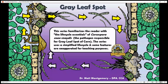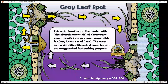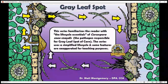Gray Leaf Spot is caused by this little pathogen — Cercospora zeae-maydis — but basically it's a fungus. What I'm going to present here is a simplified life cycle. I've exaggerated the size of some of the things in this life cycle just to give you a better understanding of how the pathogen works. The whole idea here is to make this enemy known. We see the spots, we see the lesions, but I want you to appreciate everything that leads up to that leaf blight that we call Gray Leaf Spot.